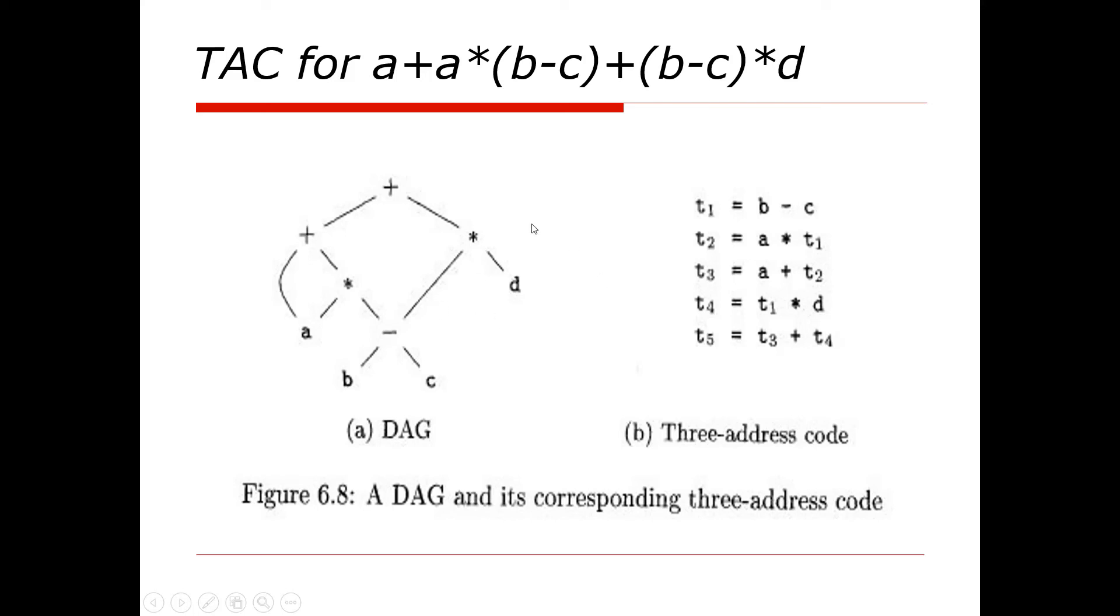We have to complete the right part. We have already b-c, and d will be multiplied with b-c. So b-c is already t1, and t1 will be multiplied with d, so we get t4 = t1*d. Finally, the left side, that is t3, and the right side, t4, will be added together, so we gave t5 = t3 + t4.